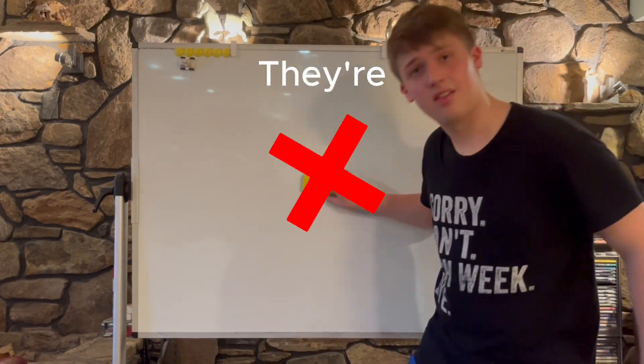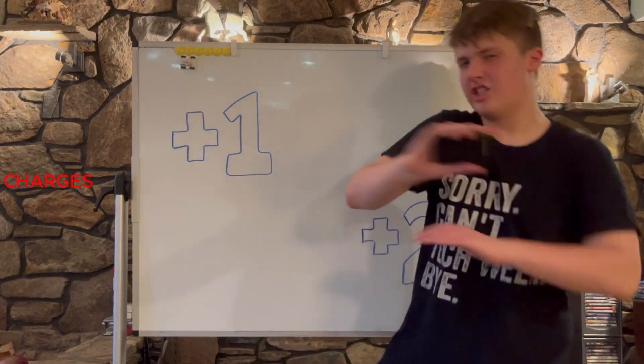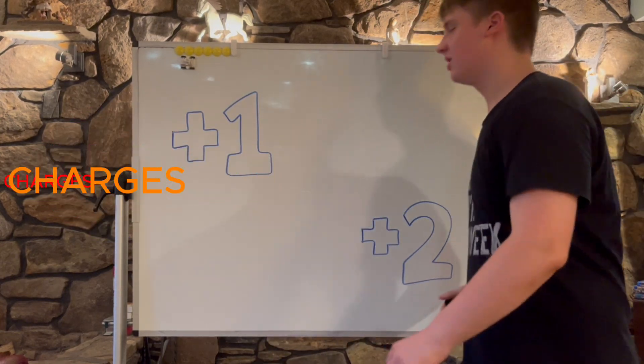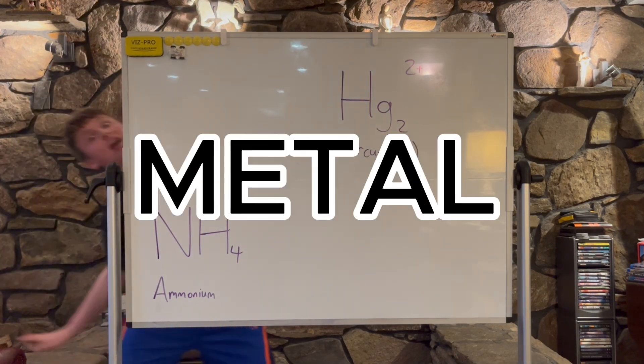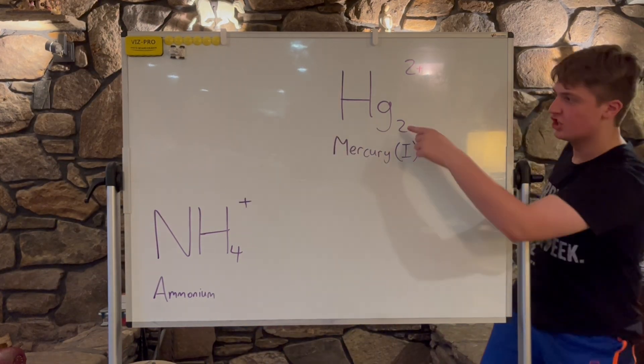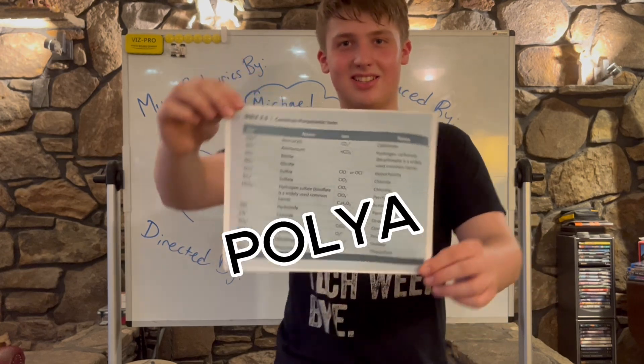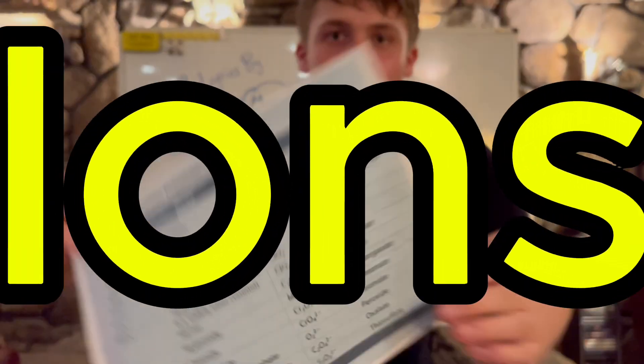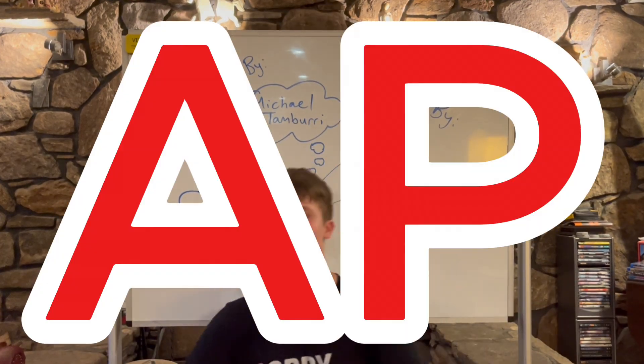But instead they're positive. Plus one and plus two are their charges. The first is ammonium, NH4. But the last one is metal: it's Hg2, mercury one with a Roman numeral. Now you know the basic polyatomic ions. I hope you learned today. Stay tuned for more AP fun.